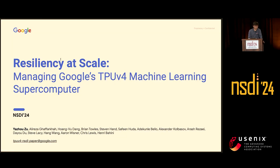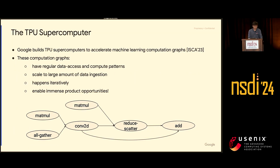This work represents the contribution of many people at Google. In this paper, we talk about how we manage Google's TPU supercomputers. As many of you probably know, we build our own chips and supercomputer clusters to accelerate our machine learning computation graphs. This diagram here shows one example of a computation graph we process for Google. It doesn't represent any real workload, but gives you a good idea of what kind of workloads we handle.